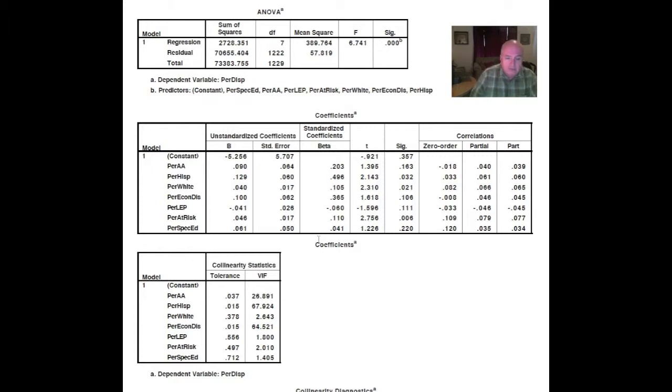Now, we have something very important, and that's the coefficients. We have a constant of negative 5.256. And then we use the standardized beta coefficients. As you look at them, the largest of those is 0.496, which is the percent Hispanic, as playing into whether or not they had disciplinary placements. Then the percent economically disadvantaged. So what we see from that is that if you're Hispanic and you're economically disadvantaged, or African-American even, 0.203, you're going to go into disciplinary placement. You just haven't got much chance for that.